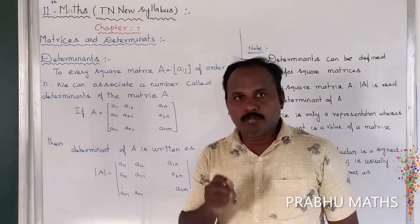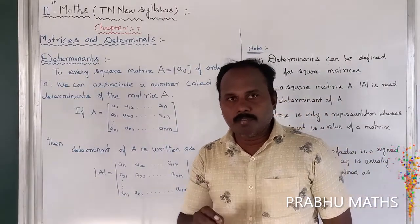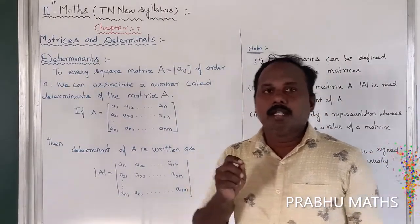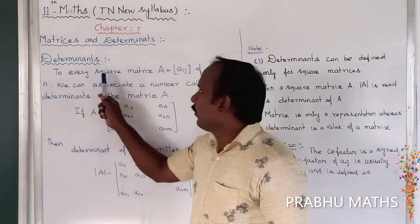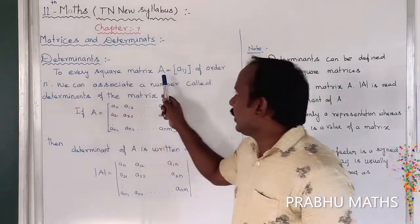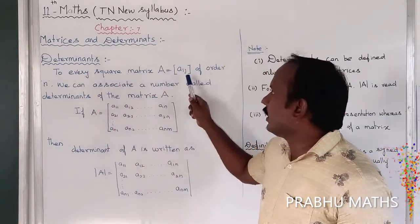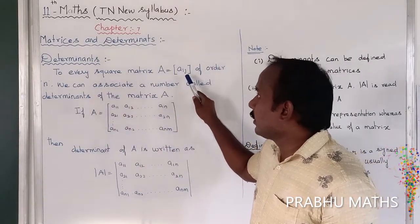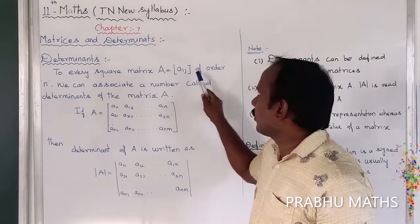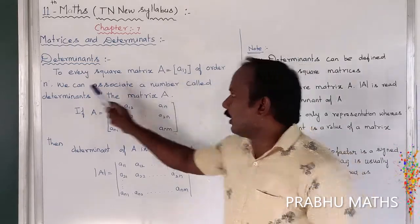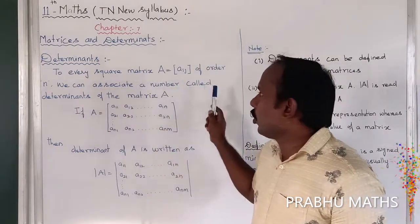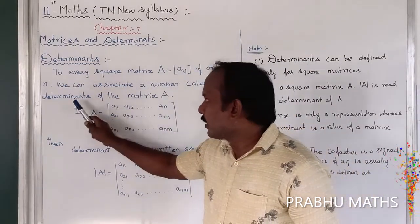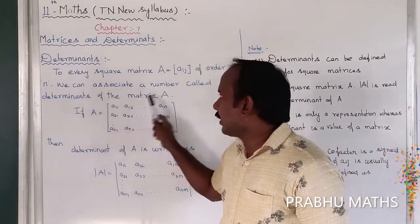To every square matrix — whether 2 by 2, 3 by 3, 4 by 4, or 5 by 5 — there is a determinant. So to every square matrix A equal to Aij, which is called a matrix of order n, we can associate a number called the determinant of matrix A.